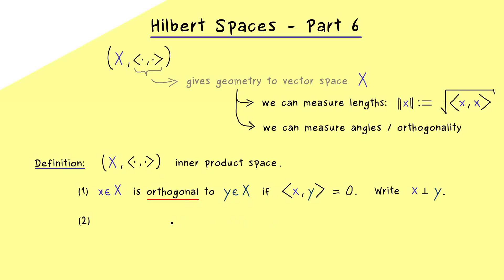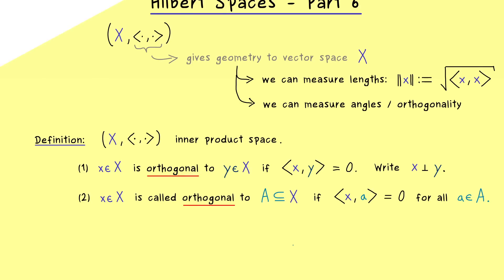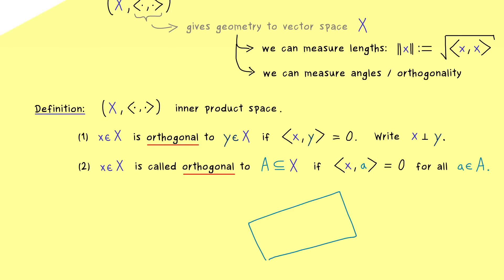We can also easily extend the term to a whole subspace of X. We say that vector x is orthogonal to a subspace A. Please note: this can be any subspace, in particular it could be an infinite-dimensional one. The definition should be clear: when we take any vector a from our subspace, the inner product should be equal to zero for all a in A. We can easily visualize that — just imagine a given subspace A inside our vector space X, and then vector x has to be orthogonal to each vector inside A.